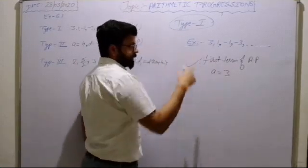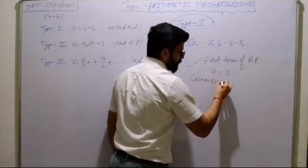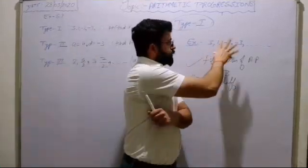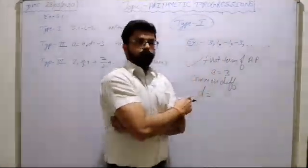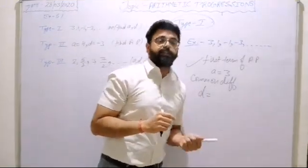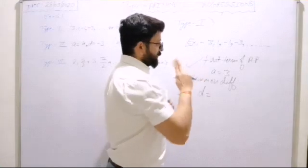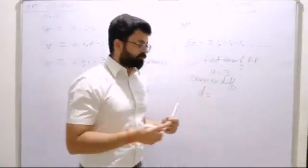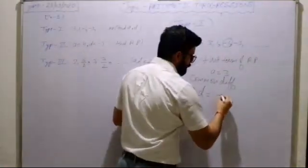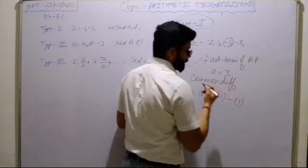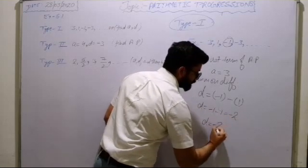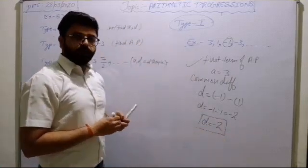Now the second part: the common difference d. How will we calculate the common difference? It is the difference between two consecutive terms — you take any two consecutive terms and the difference should be the same. Always subtract the preceding term from the succeeding term. So: d equals (-1) minus (1) which equals -1 minus 1, which equals -2. So the common difference is -2.